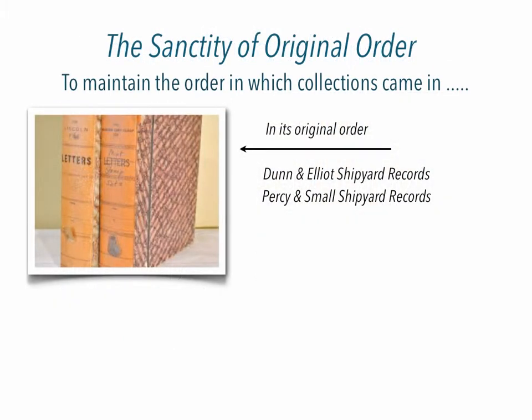The sanctity of original order is to maintain the order in which collections came in. The Dun & Elliott and Percy & Small shipyard records mostly came in their original order — they came in their filing boxes. So I knew immediately that the letters were organized a specific way by the creators. That was original order.